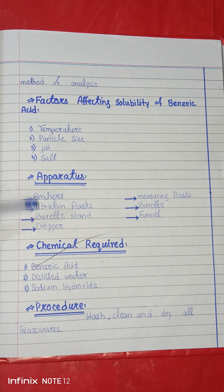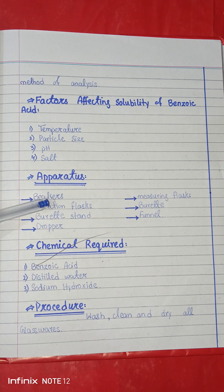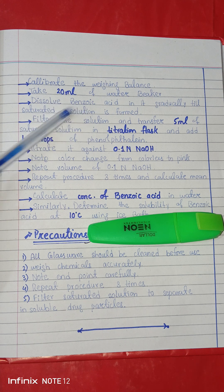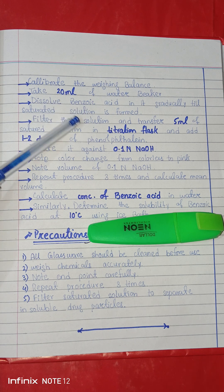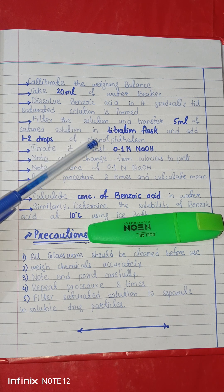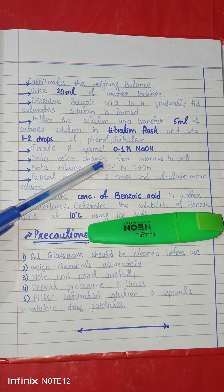The procedure is as follows: first, wash all the glassware you are going to use properly. Then calibrate your weighing balance. Take 20 ml of water in a beaker, add benzoic acid, and dissolve it. Transfer the solution into a conical flask, add phenolphthalein indicator, and then add 0.1 molar NaOH.